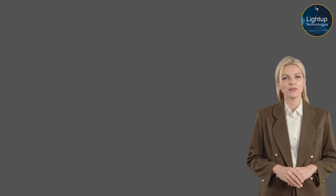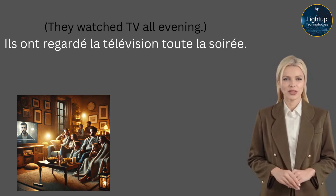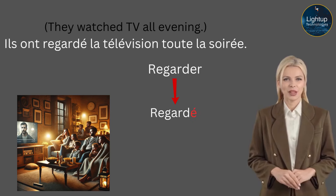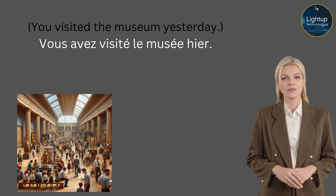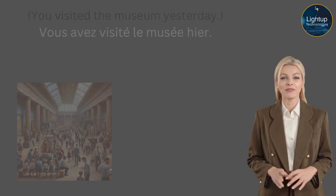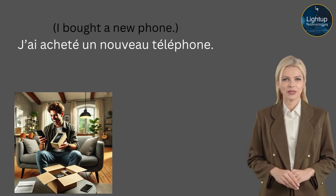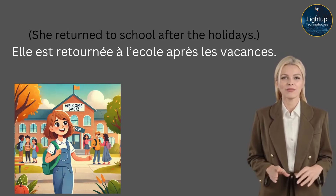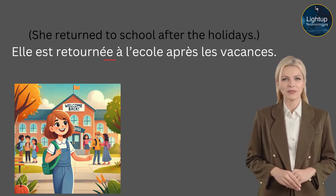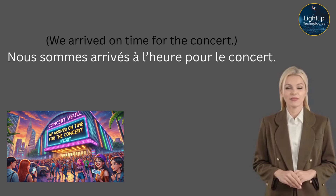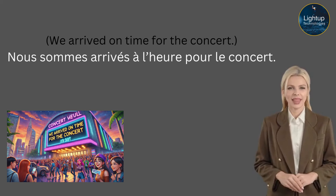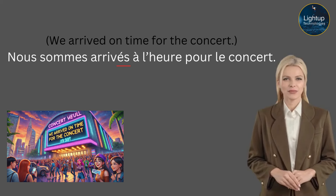Let's look at some examples. 'They watch TV all evening' — Ils ont regardé la télévision toute la soirée. For the past participle of regarder, just drop the r and add the accent. No s needed because the auxiliary is avoir. 'You visited the museum yesterday' — Vous avez visité le musée hier. 'I bought a new phone' — J'ai acheté un nouveau téléphone. 'She returned to school after the holidays' — Elle est retournée à l'école après les vacances. We add an e because the auxiliary is être and it is feminine — retournée is a movement verb. 'We arrived on time for the concert' — Nous sommes arrivés au concert. We add an s because nous is plural.